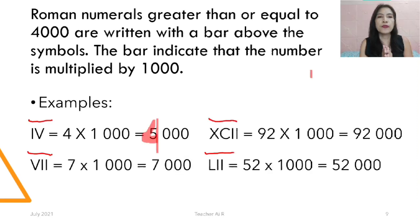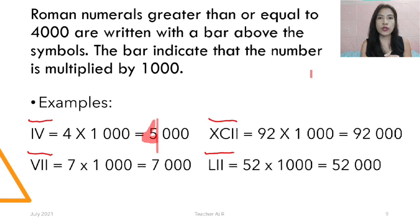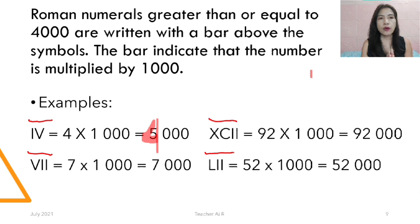Roman numerals greater than or equal to 4,000 are written with a bar above the symbols. The bar indicates that the number is multiplied by 1,000. For example, IV with a bar equals 4 times 1,000 which is 4,000. VI with a bar is 7,000. XCII with a bar: XC is 90 plus II is 2, so 92 times 1,000 equals 92,000. LII with a bar: L is 50 and II is 2, so 52 times 1,000 equals 52,000.